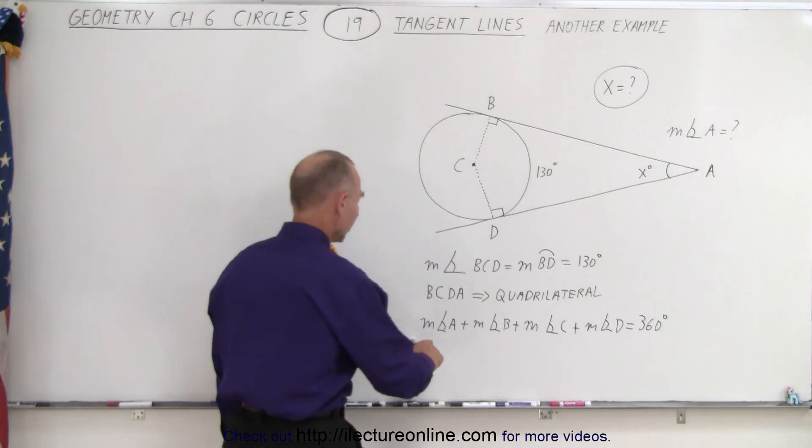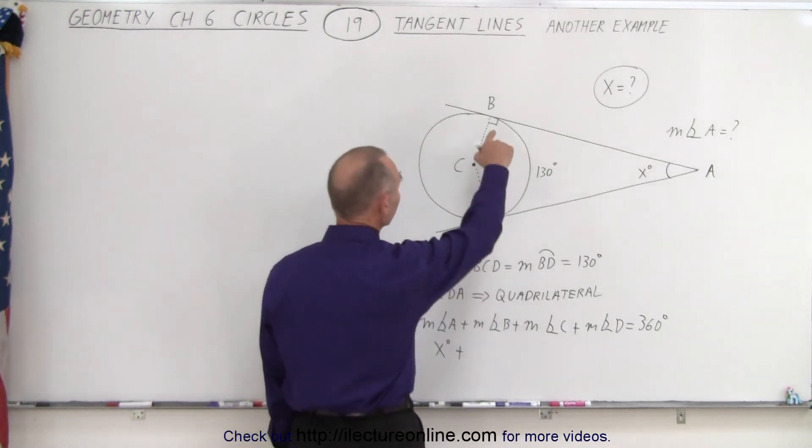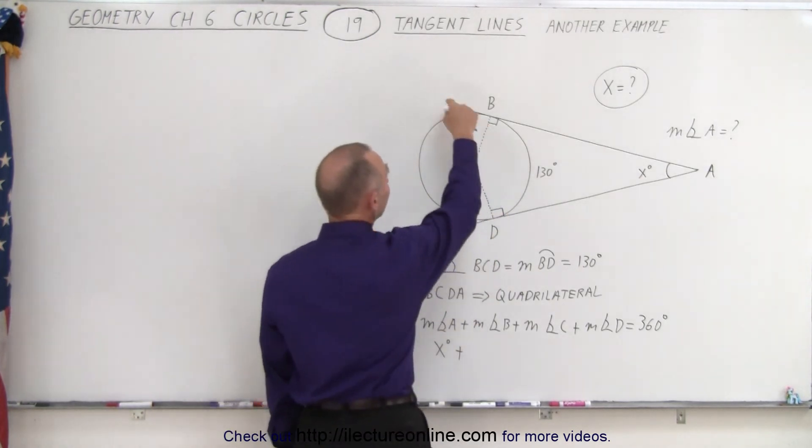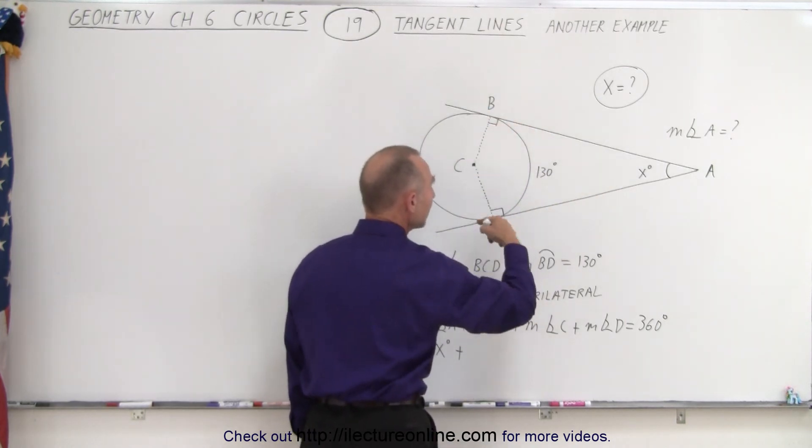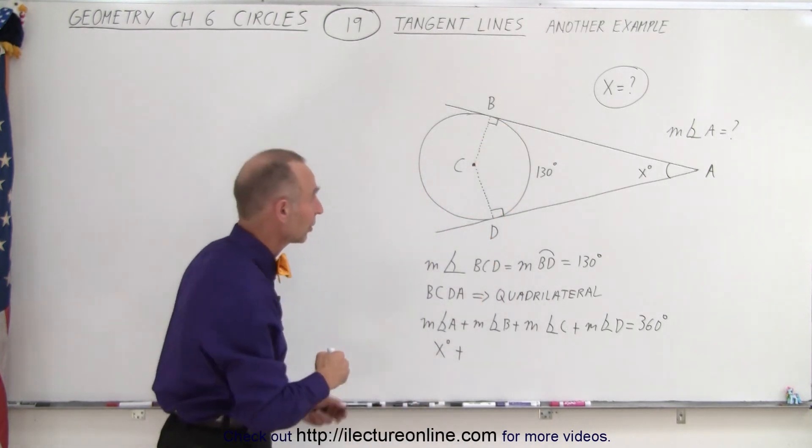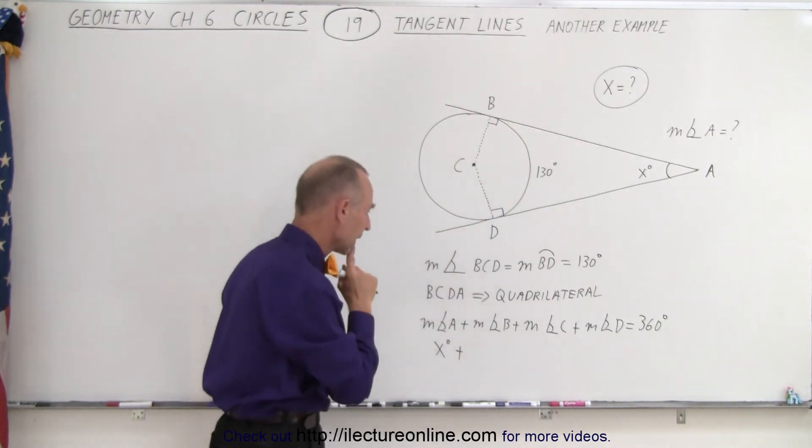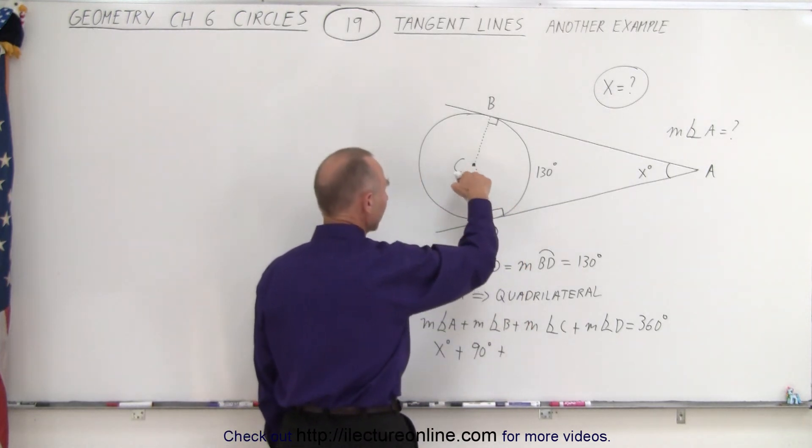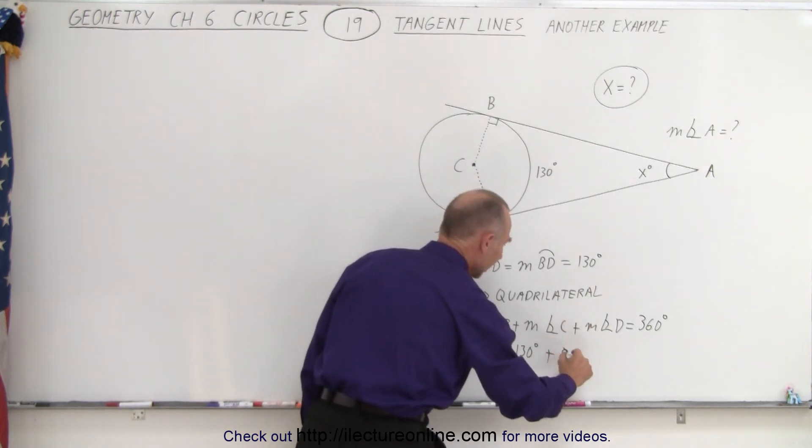Which means that measure of angle A, which is x degrees, plus the measure of angle B which must be 90 degrees because that's what the symbol says, which indicates that the line AB must be tangent to the circle and the line AD must be tangent to the circle because we can see here that they are perpendicular. They make an angle that's essentially a 90 degree angle with the radius of the circle. Therefore, this must be 90 degrees. Here we determined that this must be 130 degrees and this here must be also 90 degrees.